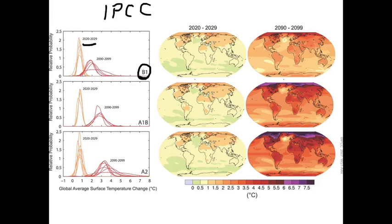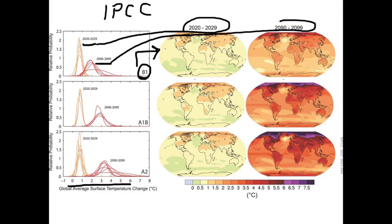that decade, and how much warming might occur out to 2090 to 2099 in degrees Celsius, which are listed along the bottom here. And then these maps correspond here on the right to the warming from 2020 to 29, the average of that decade, and what you expect late in the century that we're in now for this low emissions.